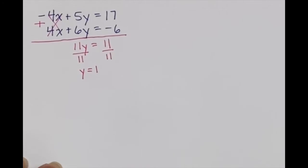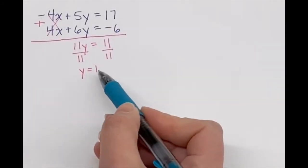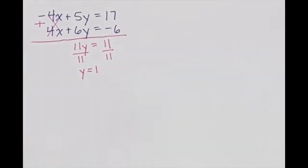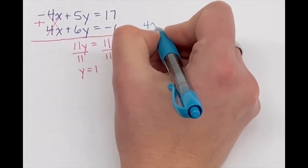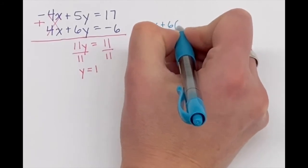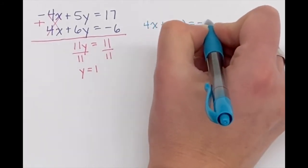To figure out what the x value is, you simply just have to substitute this value of 1 into one of the other equations. I'm going to just plug that into the bottom equation. So 4x plus 6 times 1 is equal to negative 6.